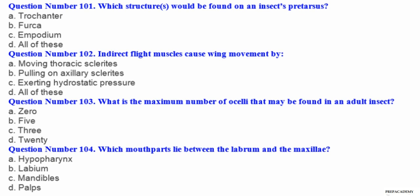Question number 101. Which structure would be found on an insect's praetarsis? A trochanter, B furca, C empodium, D all of these. Question number 102. Indirect flight muscles cause wing movement by: A moving thoracic sclerites, B pulling on axillary sclerites, C exerting hydrostatic pressure, D all of these.